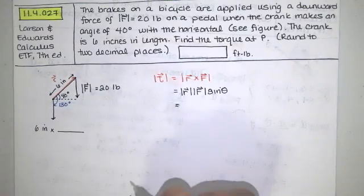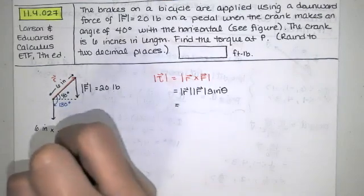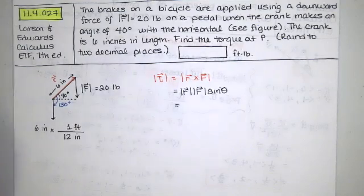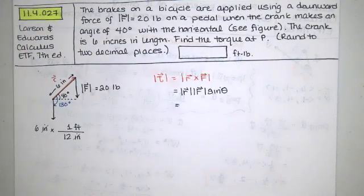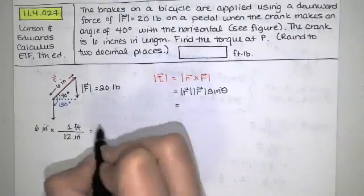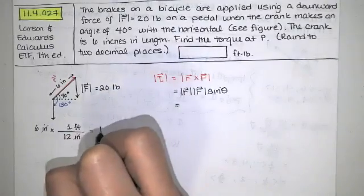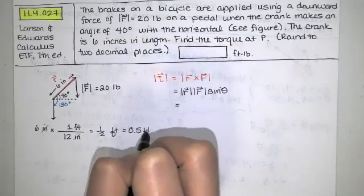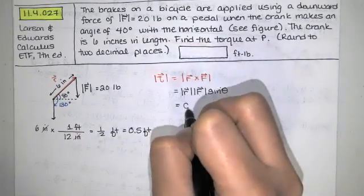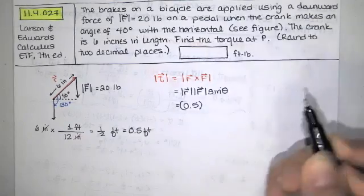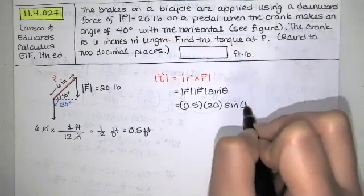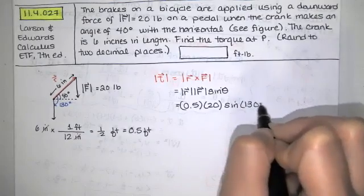Using dimensional analysis, there are 12 inches in one foot, so six inches equals one half of a foot, or 0.5 feet. So we have 0.5 times the magnitude of the force, which is 20, times the sine of the angle between them, which is 130 degrees.